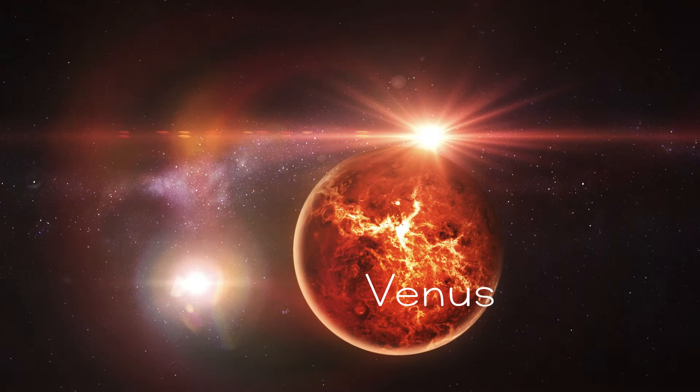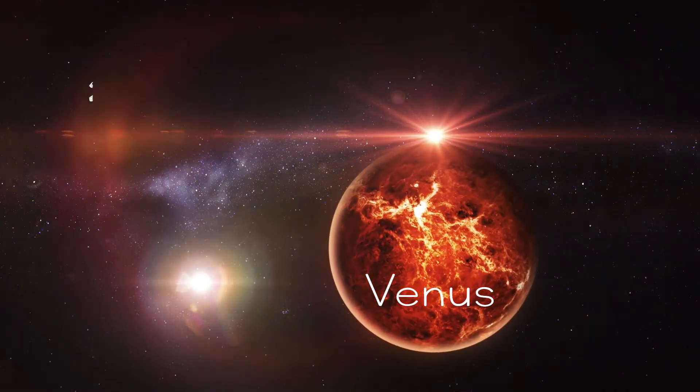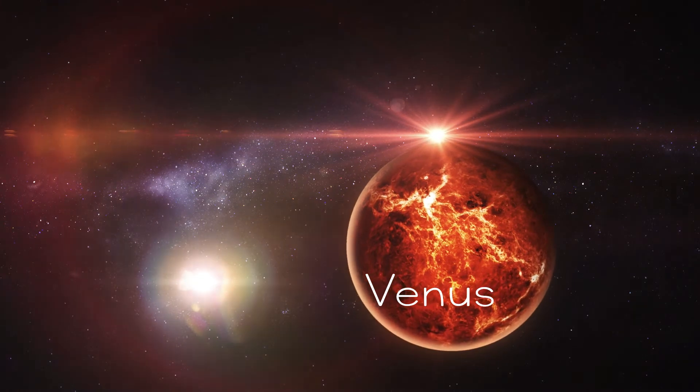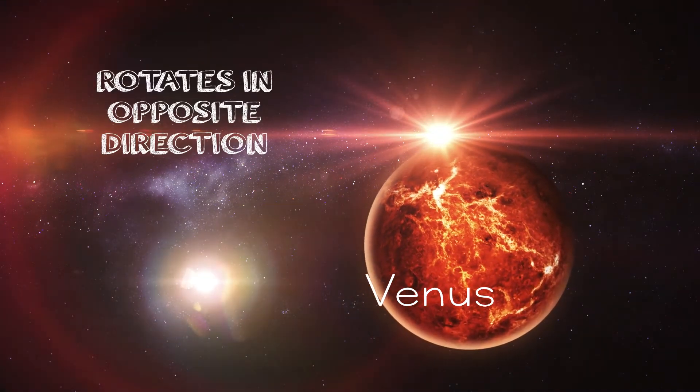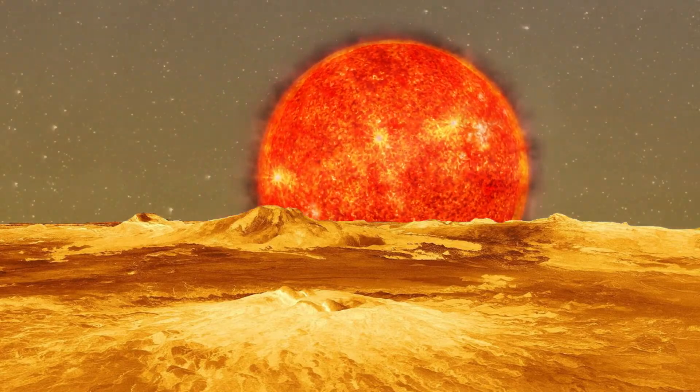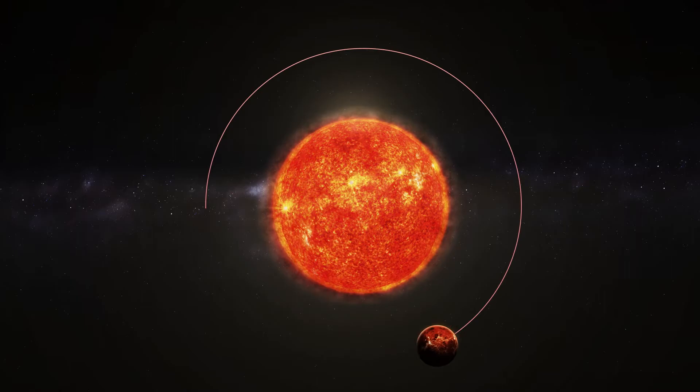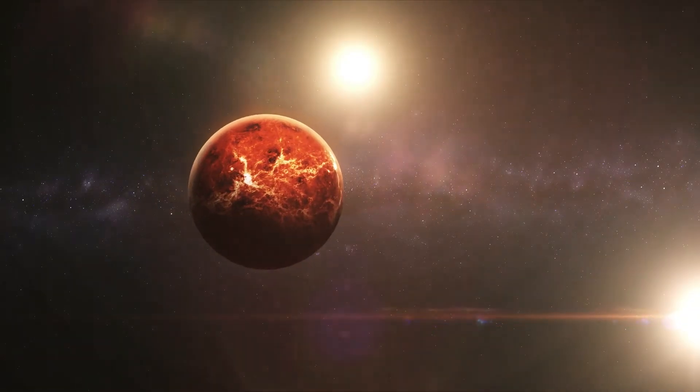What about Venus? Venus is the second planet from the sun, and Earth's closest neighbor. Venus spins slowly, and actually rotates in the opposite direction. So the sun rises in the west, and sets in the east. Its orbit is almost circular. And, similar to Mercury, Venus doesn't have much of a tilt.